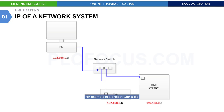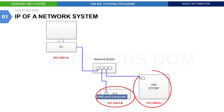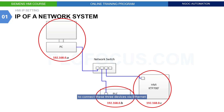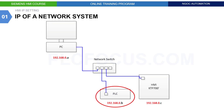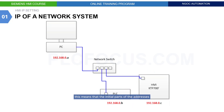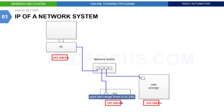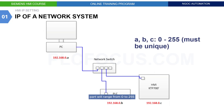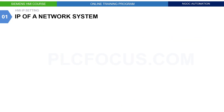For example, in a project with a PLC, HMI, and computer, to connect these three devices via Ethernet, all three must be in the same network layer. This means that the initial parts of the addresses must be the same, and the last address part will range from 0 to 255, but they must not be the same.